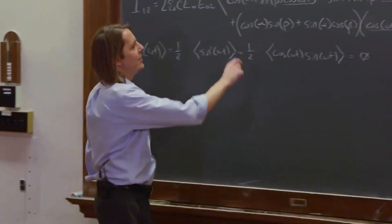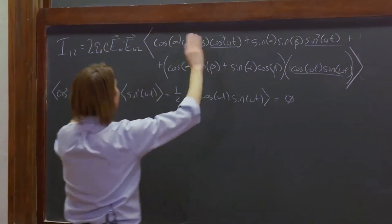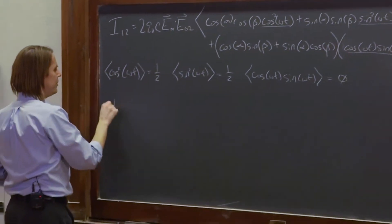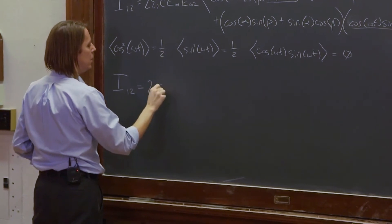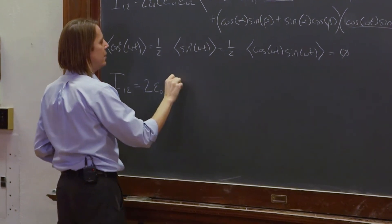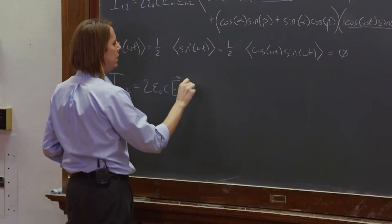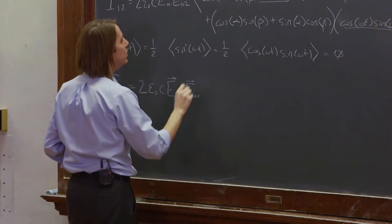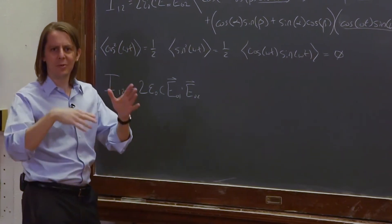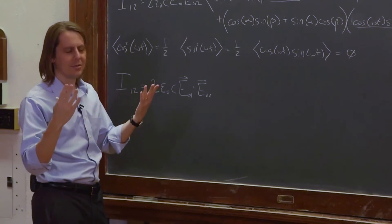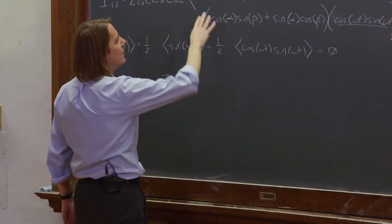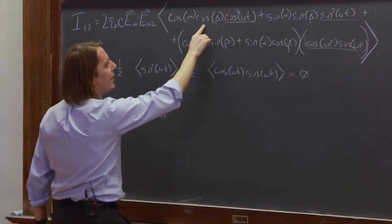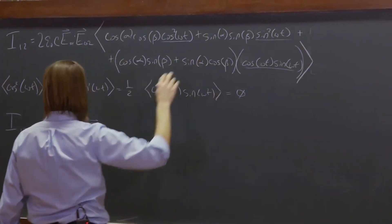So, since we've done that, basically this is gone and this is gone. The time averages are gone. We've got it down to I₁₂ equals 2ε₀c E₀₁ dotted with E₀₂. All this, just to get the two sine waves to add or subtract. I mean, it's ridiculous.